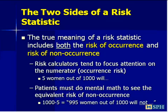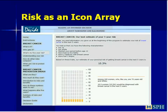One of the most important principles of risk communication is to acknowledge both sides of a risk statistic—the risk of occurrence and the risk of non-occurrence. Risk calculators by their very nature tend to focus attention on the numerator, the occurrence risk. Whether it be five out of a thousand women experiencing a complication or twelve out of a hundred men developing prostate cancer, the focus is on the occurrence. We also need to remind people of the equivalent risk of non-occurrence—that even if twelve men out of a hundred might develop prostate cancer, eighty-eight out of those hundred will not.